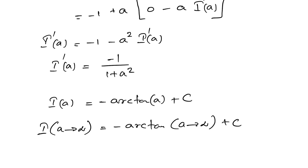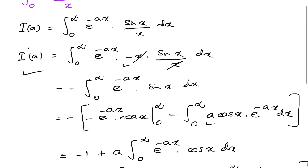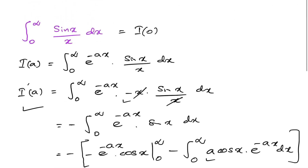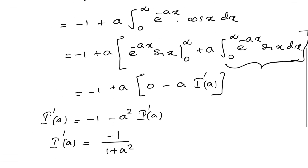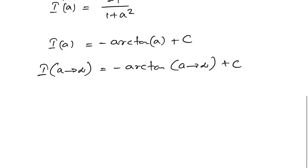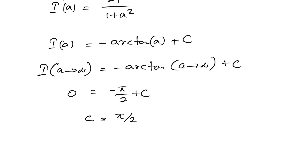We know that I(∞) = 0, so we have 0 = −arctan(∞) + C. Since arctan(∞) = π/2, we get 0 = −π/2 + C, which means C = π/2.